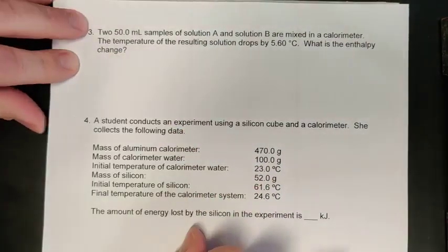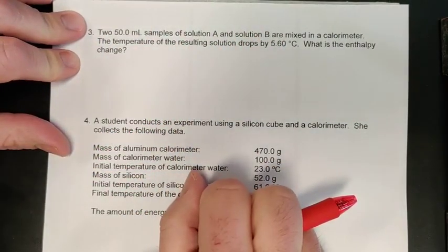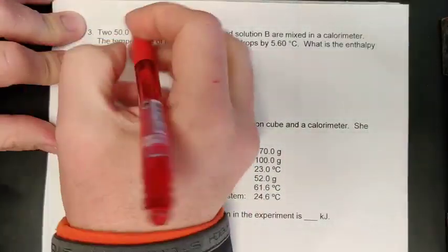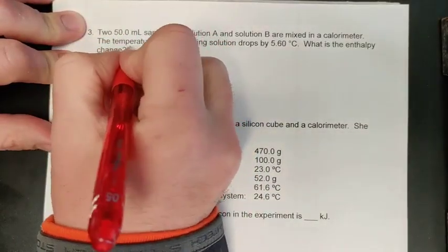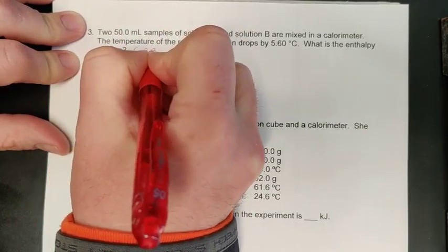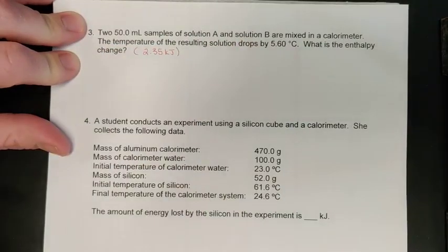A couple more examples to do here. For the third one, we have some very similar information to what we had in question number two, so I'll just give you that answer. You guys can try that one on your own. We have for this one—you should have 2.35 kilojoules if you do it correctly when you try it on your own.